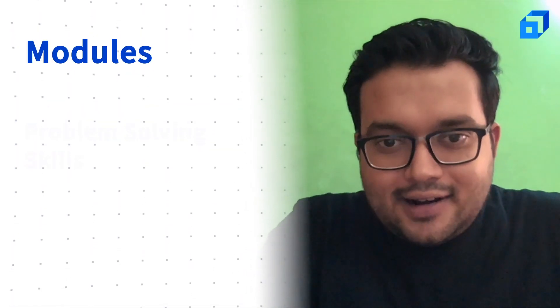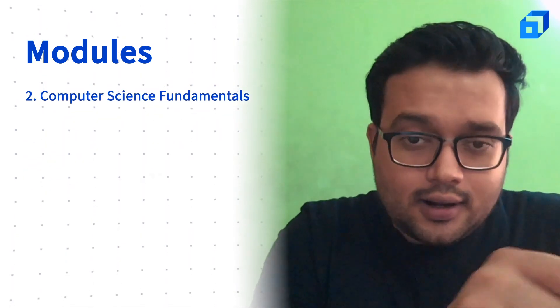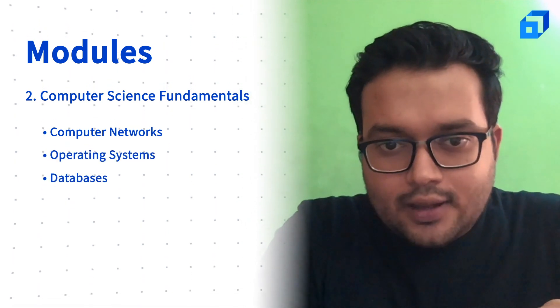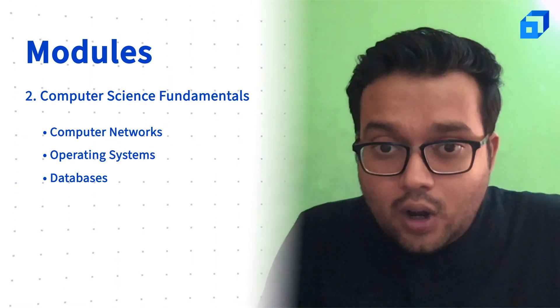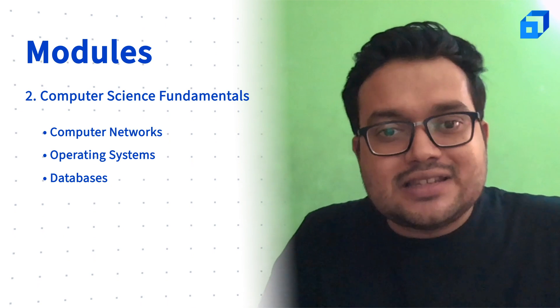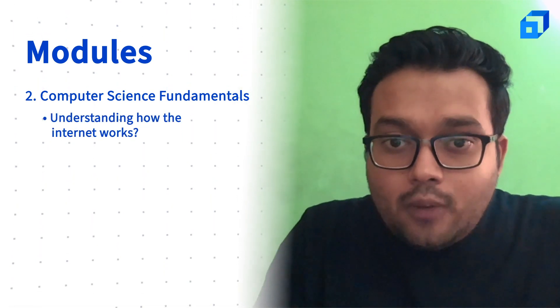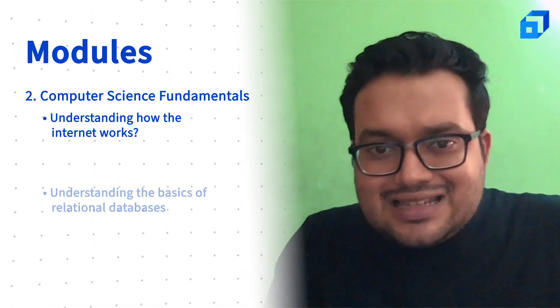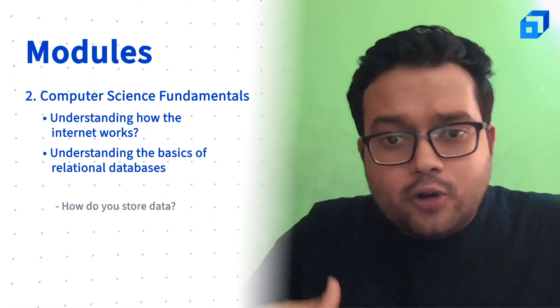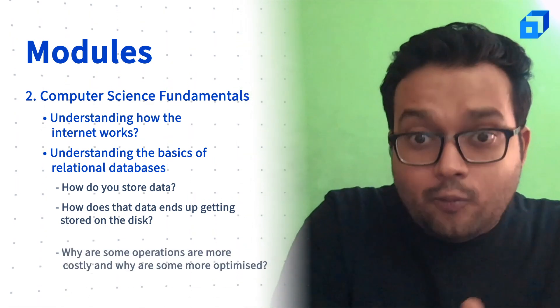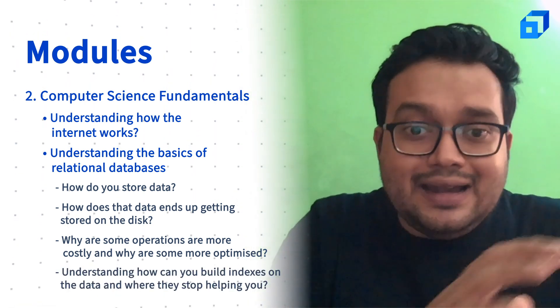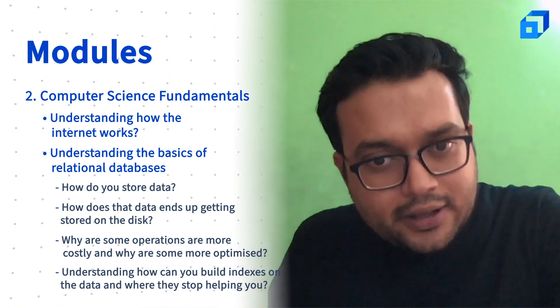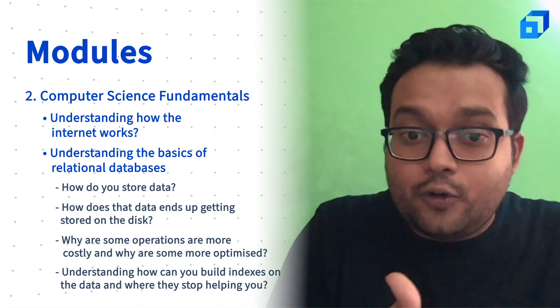The second module at Scalar Academy is a module on computer science fundamentals. In this module we cover computer networks, operating systems, and databases. These concepts are very important for any software engineer to be able to appreciate the depth of systems around you or to create end-to-end systems yourself. Understanding how the internet works from a software developer's perspective, similarly understanding the basics of relational databases - how would you store data, how does that data end up getting stored on the disk, why are some operations more costly and some more optimized, understanding how you can build indexes on top of the data.